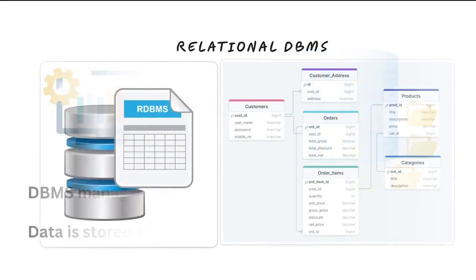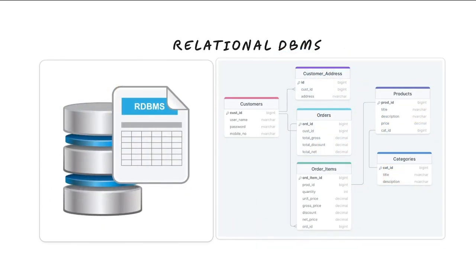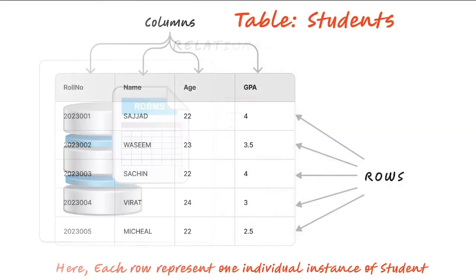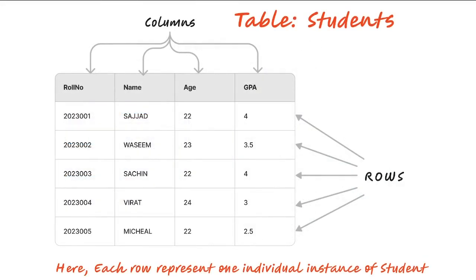What is RDBMS? RDBMS stands for Relational Database Management System. It is a type of database management system that is based on the relational model of data. In RDBMS, data is stored in tables, with each table consisting of a set of rows and columns.